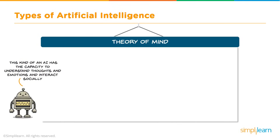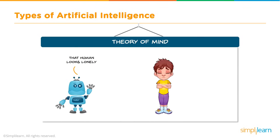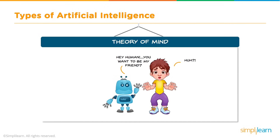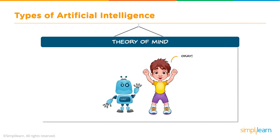Theory of mind. This kind of AI has the capacity to understand thoughts and emotions and interact socially. A machine based on this type is yet to be built. Theory of mind is the thing of the future. Certainly we see a lot of the industry poking at this as it tries to guess how you feel about things, but most of that is still based on previous data — yes/no, thumbs up, thumbs down. Theory of mind would take it one step further in understanding the emotions behind it.